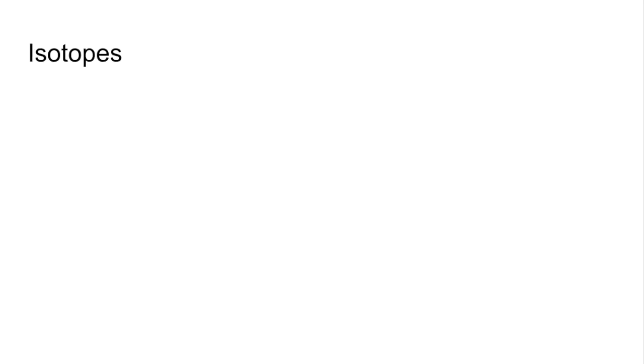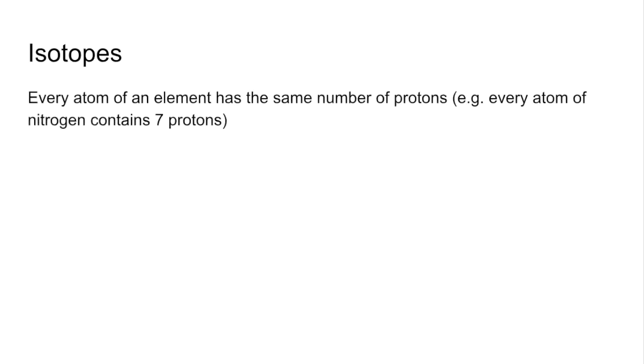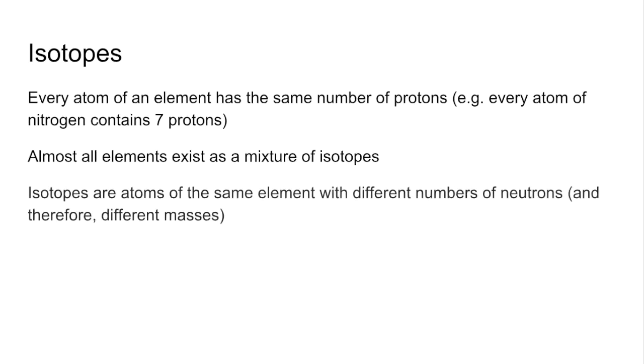We're going to move on to isotopes now. Every atom of an element has the same number of protons, so for example every atom of nitrogen has seven protons. Almost all elements exist as a mixture of isotopes and isotopes are atoms of the same element with different numbers of neutrons.